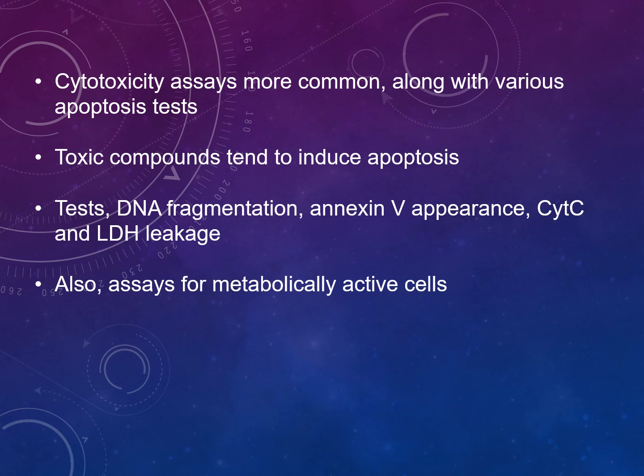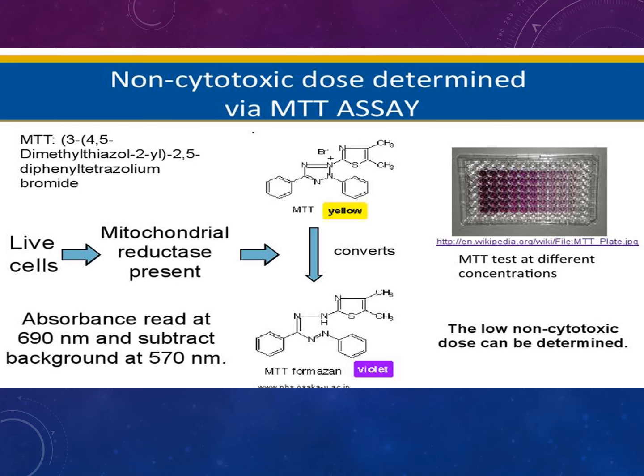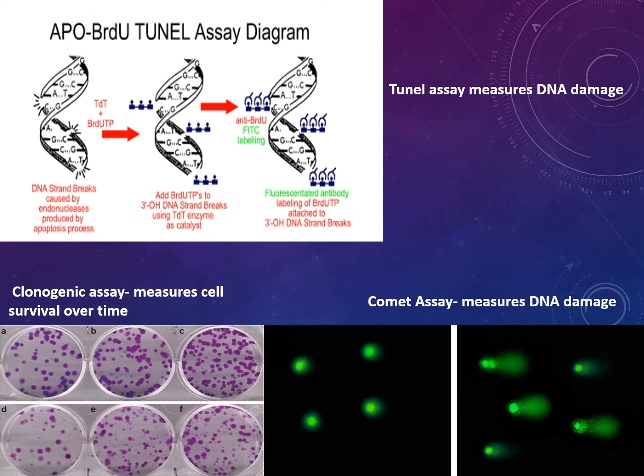However, primary hepatocytes are very difficult to work with. In the diagram, you can see live cells with mitochondrial reductase present and the absorbance shown — this is how a non-cytotoxic dose is determined via the MTT assay. The low non-cytotoxic dose can be determined this way.